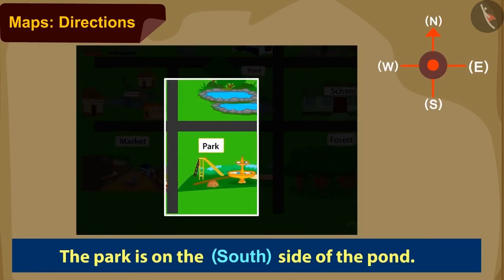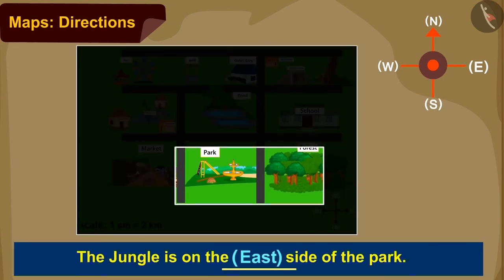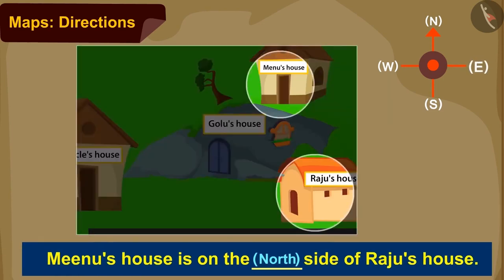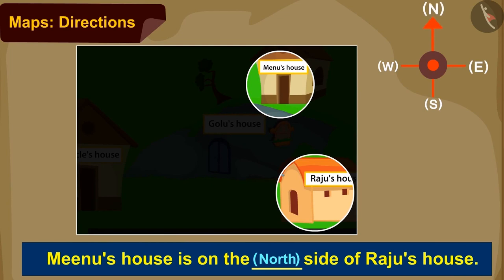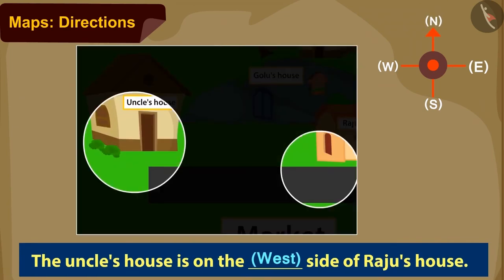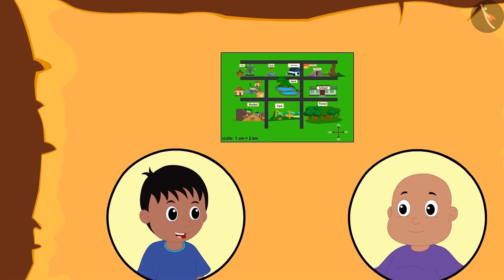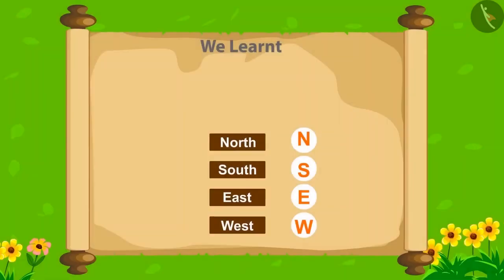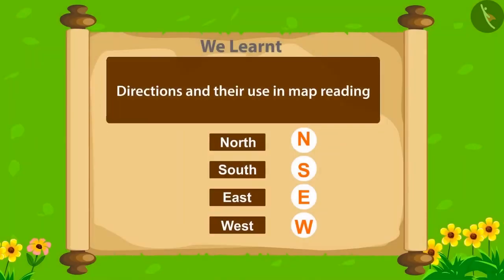Park is towards the south of the pond. Jungle is towards the east of the park. Meenu's house is to the north of Raju's house. And Uncle's house is to the west of Raju's house. Raju and Bablu are playing their interesting game — you too can play it with your friends using the map of Champapur, making your own questions about directions. So kids, in this video we learned about directions and the use of the compass.